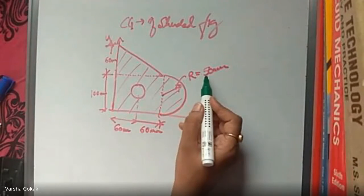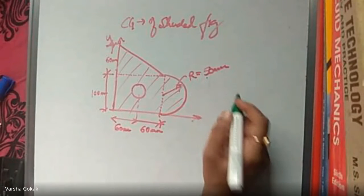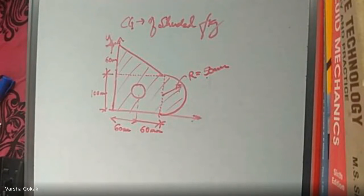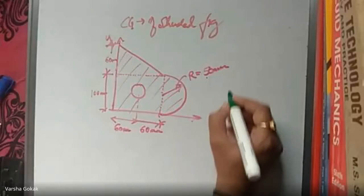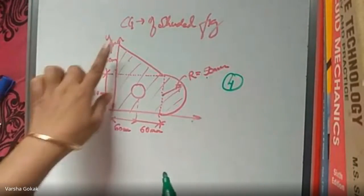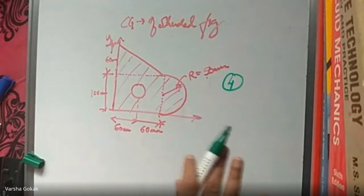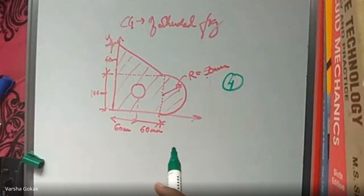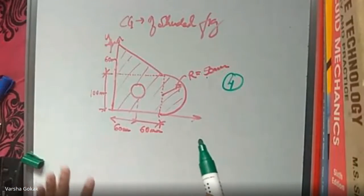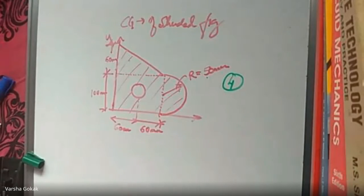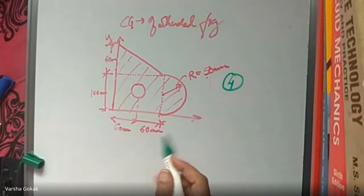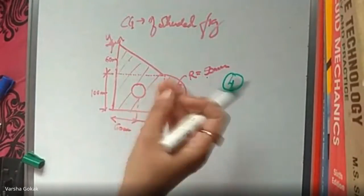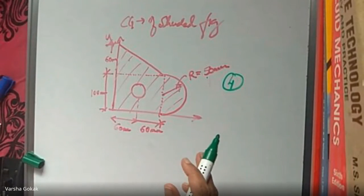How many geometric figures are there? Four: triangle, rectangle, circle, and semicircle. Since only the shaded area is required and the circle is not shaded, we find the CG of the entire figure (including the circle) and then deduct the circle. The concept is: find CG of full figure, then subtract the circle's contribution to get the CG of the shaded area.